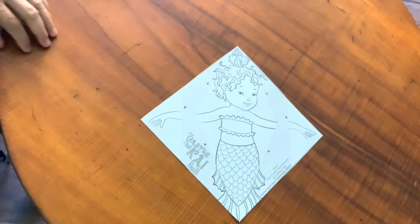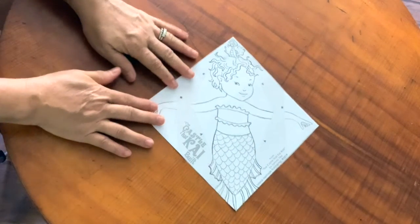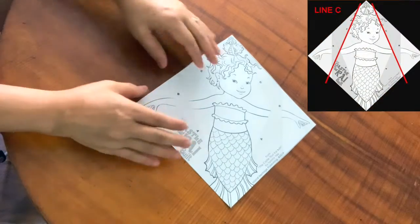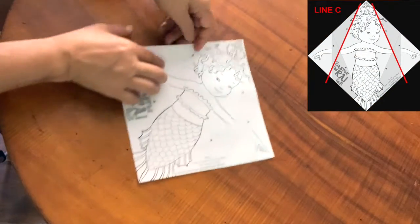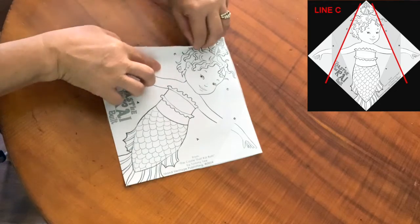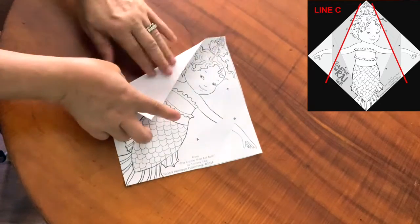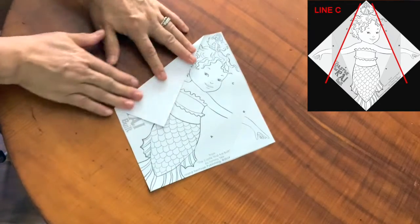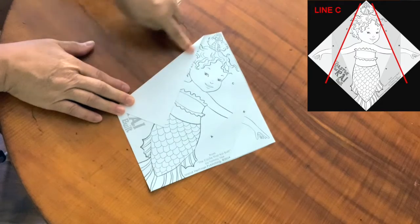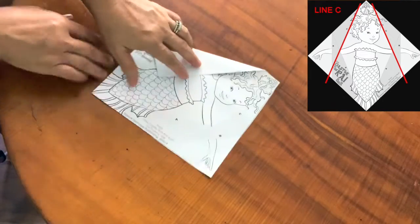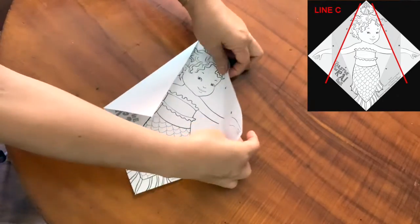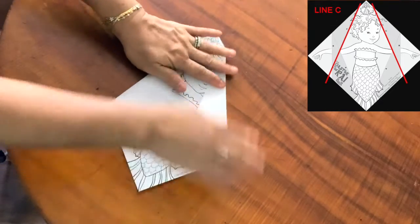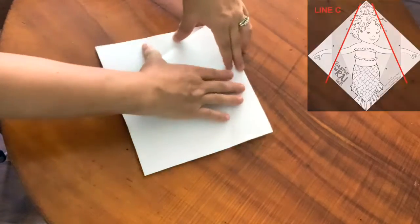Our first step is to create some guide folds along line C. Do your best and fold along line C. Remember that it doesn't go all the way to the corner. It just goes alongside her head. Let's repeat on the other side so that we have a guide fold. Okay, now we can open Kai up again.